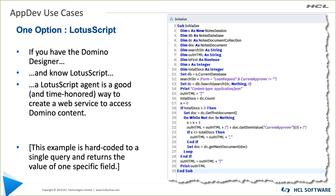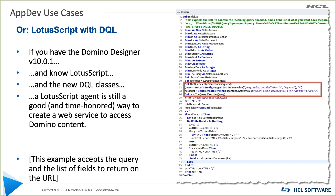With LotusScript you could build an agent that provides a fast way to retrieve the data; however, you would have to modify the Domino application to retrieve the data you are looking for. You could also use LotusScript combined with the Domino Query Language provided in Domino 10, but again this requires Domino Designer, knowledge of LotusScript, and familiarity with the new Domino Query Language classes.